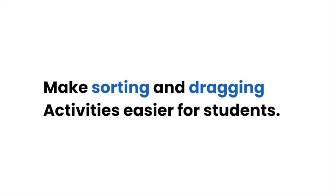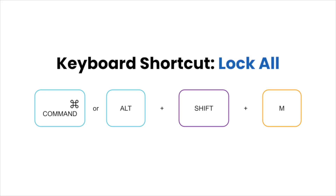Locking size makes the popular sorting and dragging activities in Seesaw easier for students. There are even keyboard shortcuts to help you do this super fast. To lock all, click on the object you want to lock. Mac users click Command-Shift-M, while PC users click Alt-Shift-M.